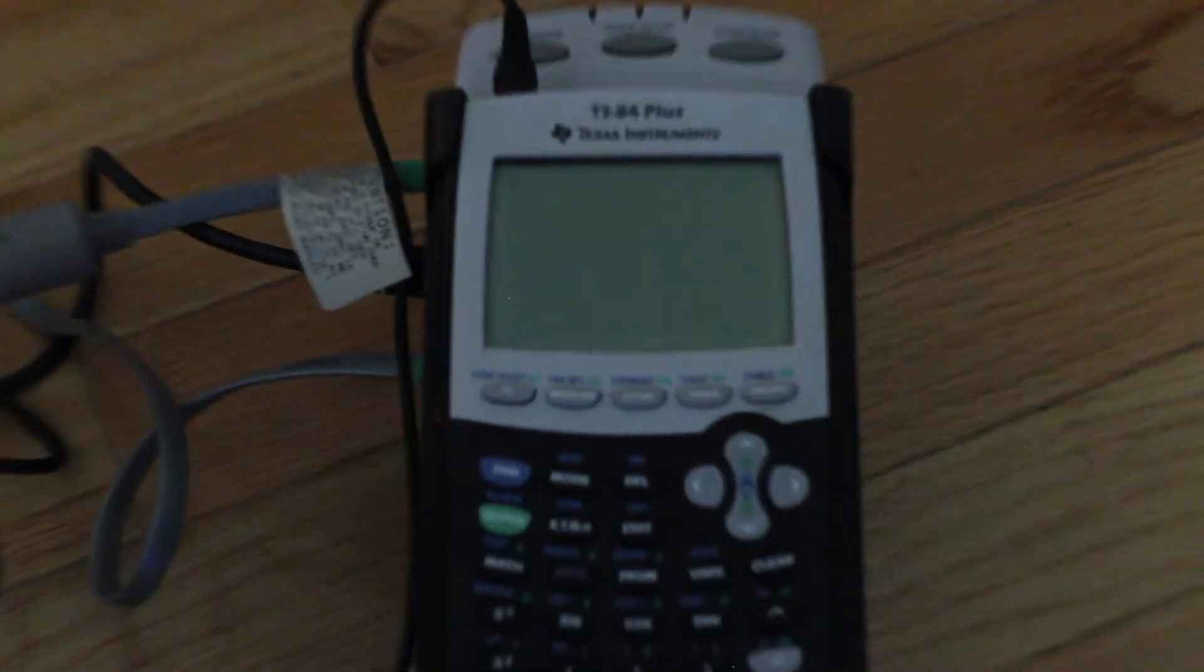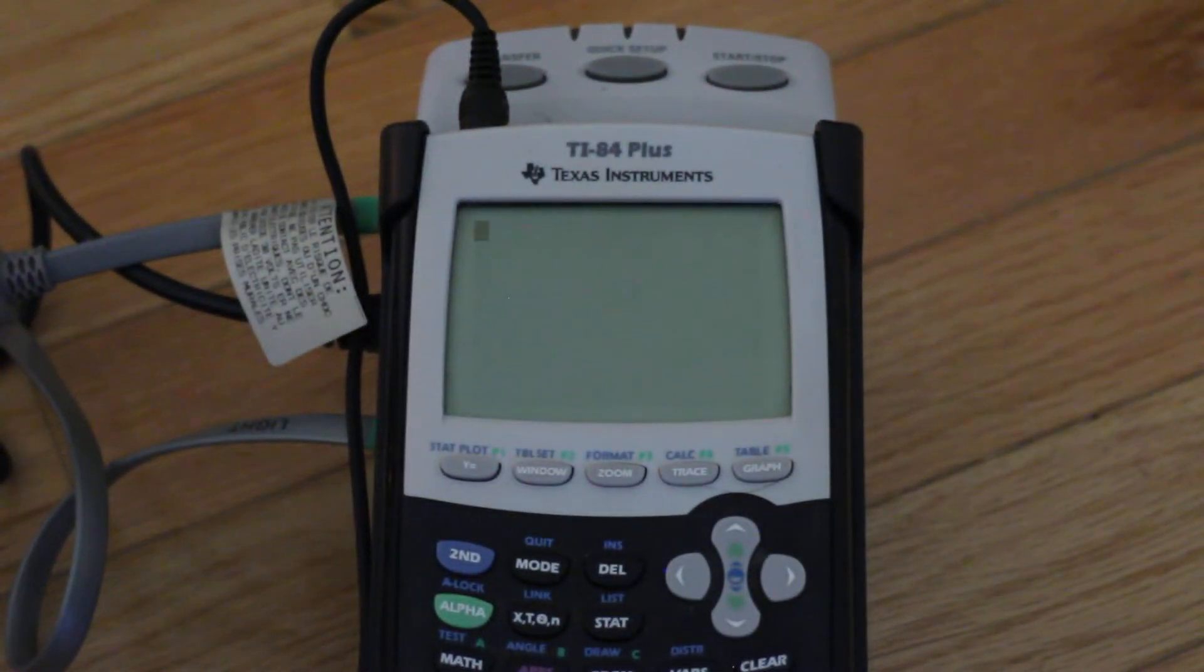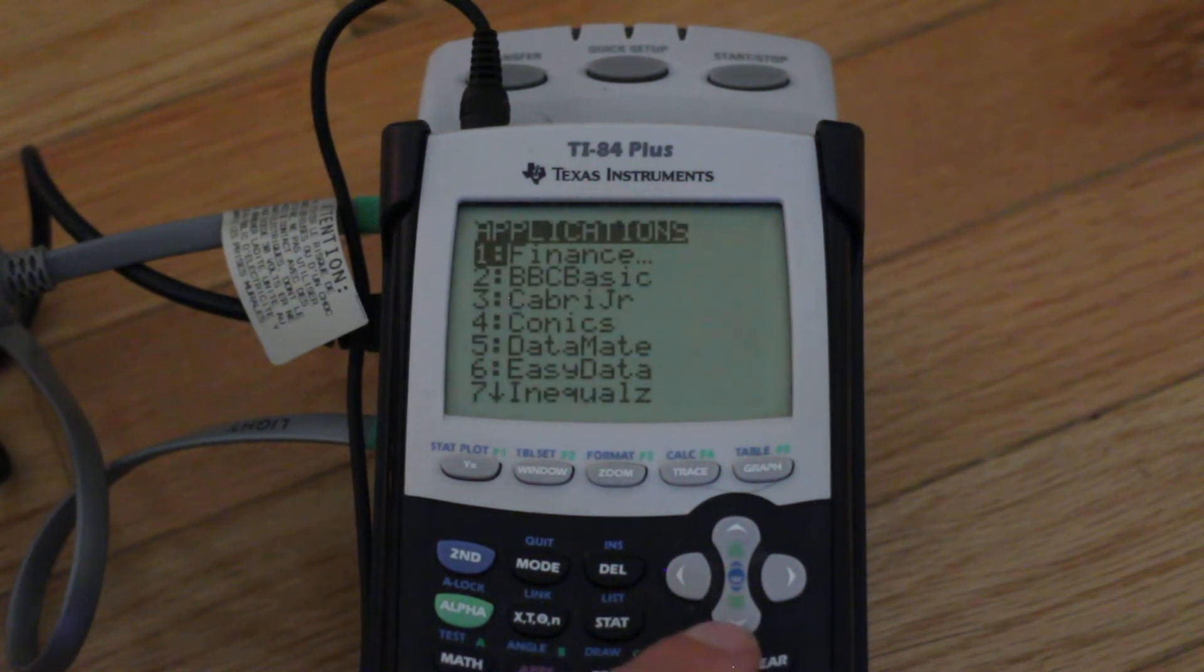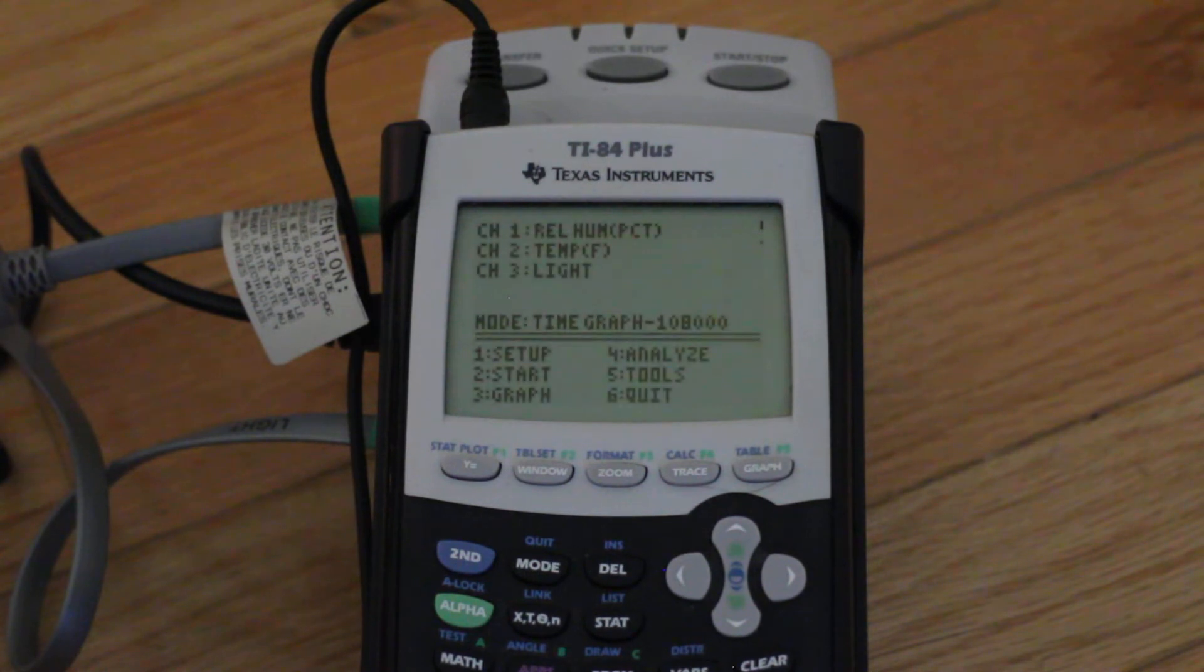I'll zoom in to the screen here. Get that really focused in. I'm going to go to apps. Five is data mate. And now we're connected to the CBL. And you should be able to see that the relative humidity in this room right now is 52%. The temperature in real time is 77 degrees Fahrenheit. You could also change to Celsius. And I guess relative light is .0148.